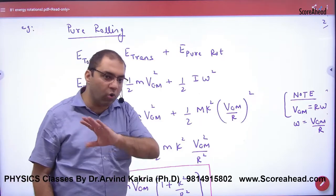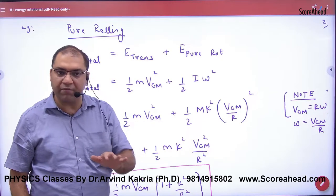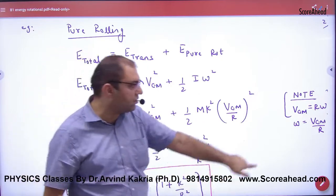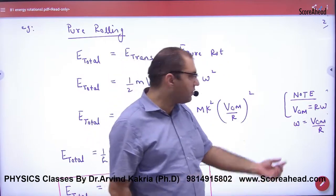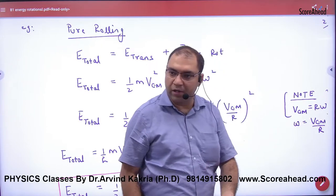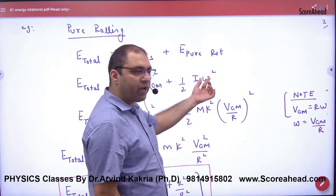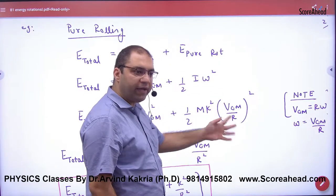When someone rolls, we started from the lecture with what center of mass formula? V equals rω. So what will omega be? V by r. So you can put omega here as V_cm by r. Clear?